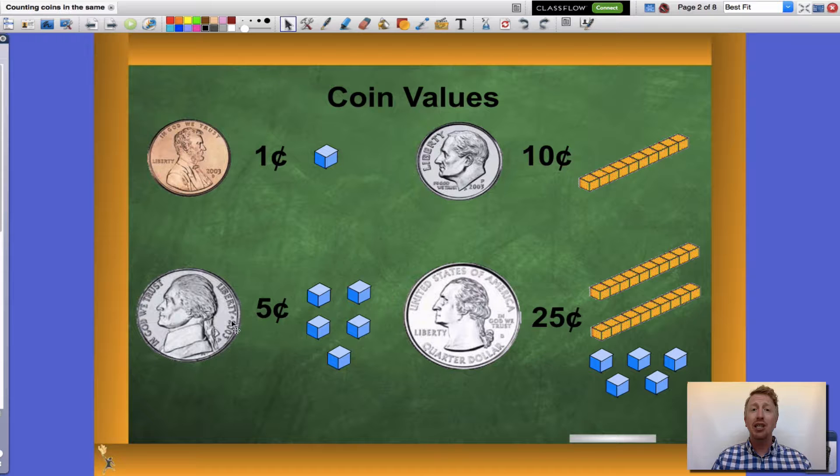A nickel is worth five cents or five base ten blocks. A dime is worth ten cents or ten base ten blocks. And finally, a quarter is worth twenty-five cents or twenty-five base ten blocks.